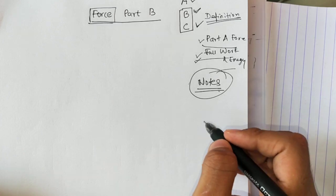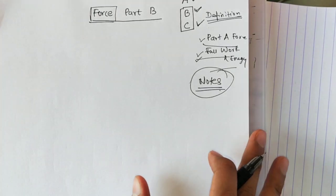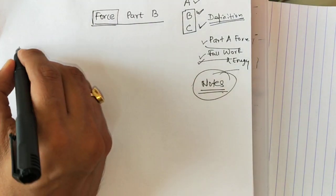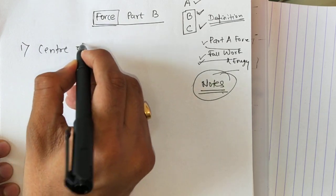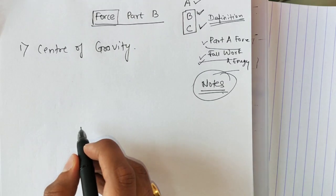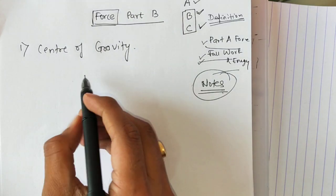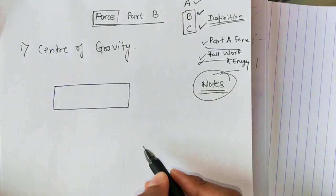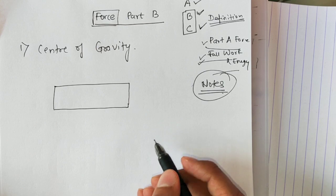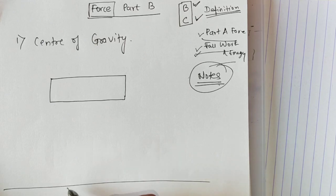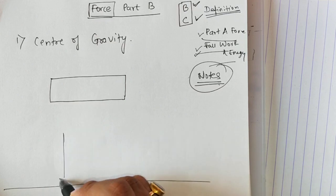There may be a few questions from there also. So let's start with Part B. The first topic is center of gravity. What is center of gravity? Let's say we have an object in the shape of a rectangle. This is the surface of earth; the earth's surface, due to gravity, pulls the object in the downward direction.